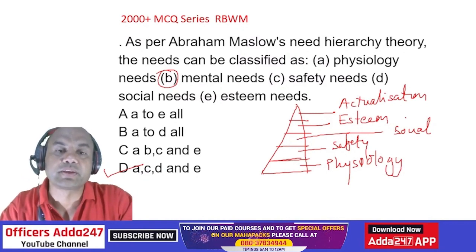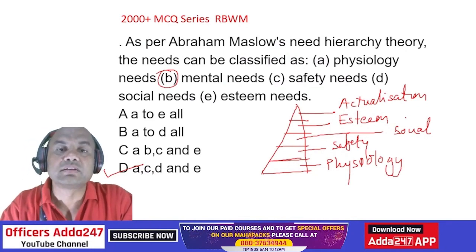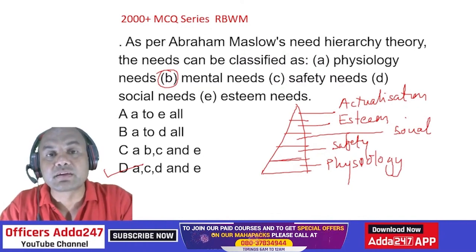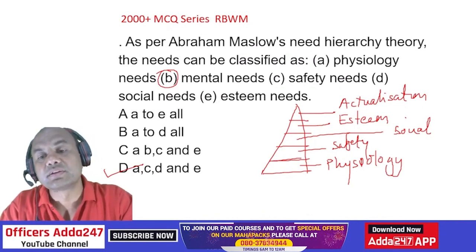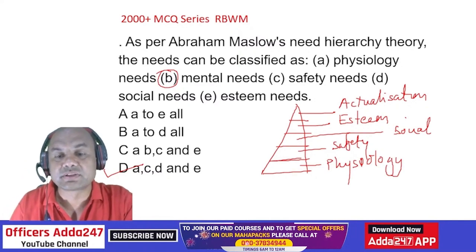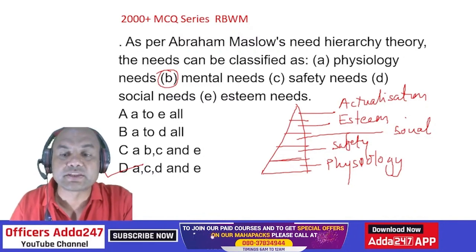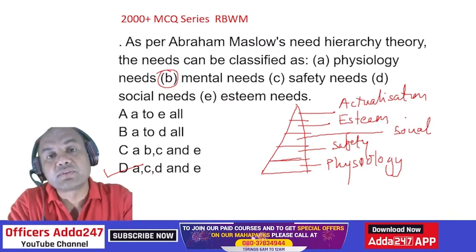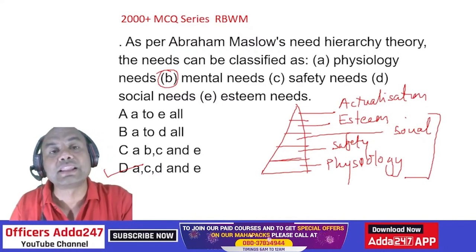Maslow's hierarchy is important because products must be designed accordingly. For example, if I design an insurance product with a premium of 10 lakhs per year, I should not target the physiological, safety, or social level person. Only the esteem and actualization level persons have the capacity for 10 lakh annual premium.